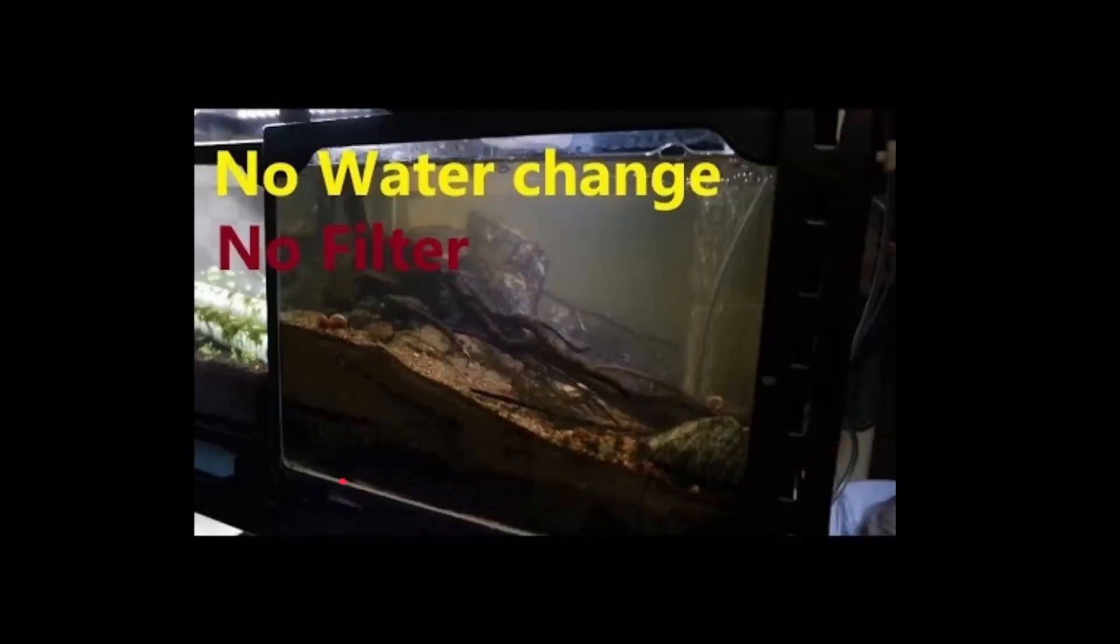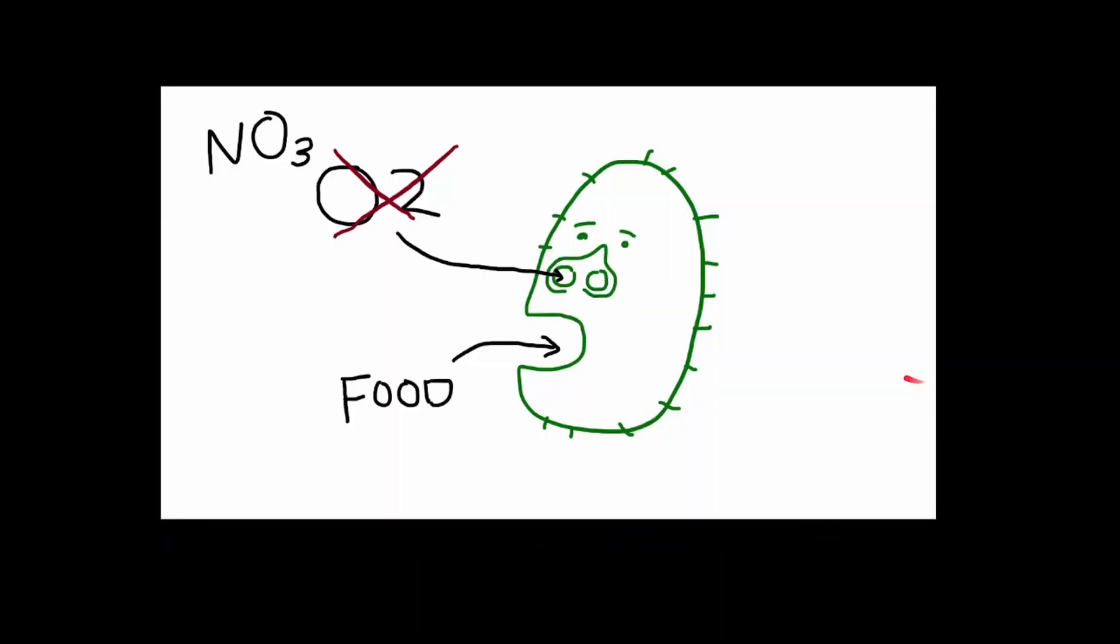But if the bacteria are in a low oxygen environment, such as a deep substrate—so if you have a tank like me and you have a deep substrate, bacteria that are living deep inside the substrate, they do not have access to the oxygen in the water. So when there is not enough oxygen, bacteria can do something different. So for us, if we don't have the oxygen, we die. We can't derive calories from the food and we die.